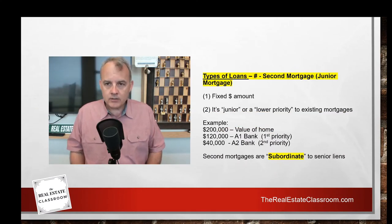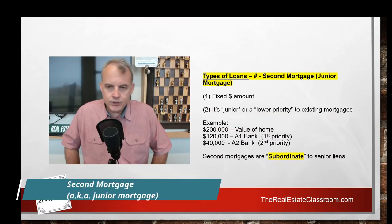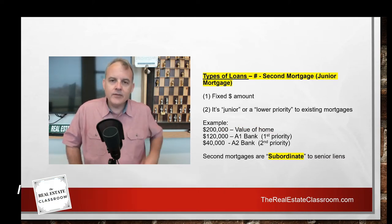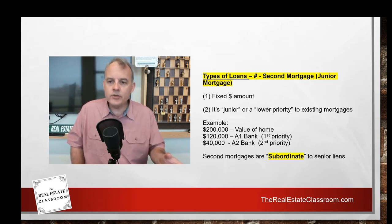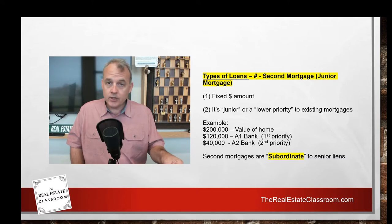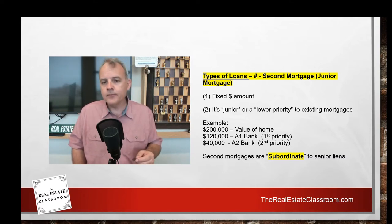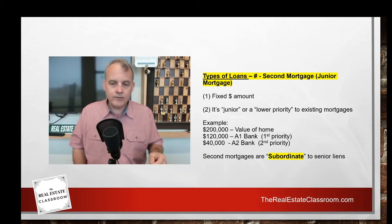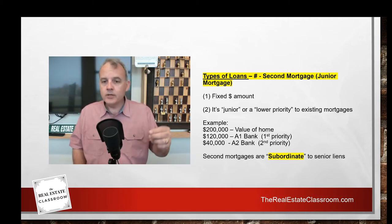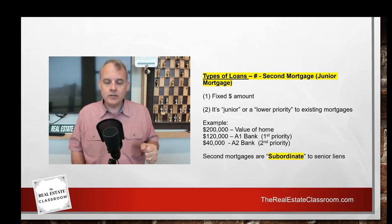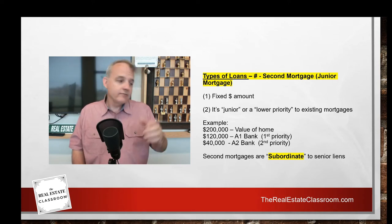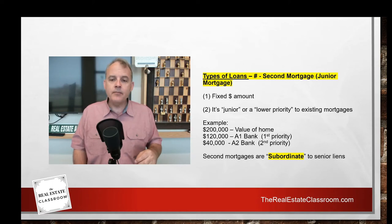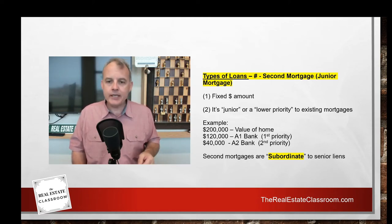The third type is a second mortgage, sometimes called a junior mortgage. It's a fixed dollar amount and is junior — lower priority — to any existing mortgages currently levied against the property. For example: a home valued at $200,000 has a first mortgage of $120,000 with A1 Bank from when the buyers purchased the property. Five years later, they want to put in windows, siding, and more, so they get a second mortgage from A2 Bank for $40,000.